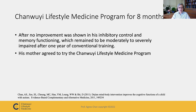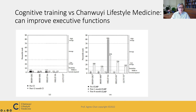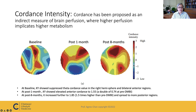After no improvement was seen with conventional training, his mother agreed to try the Chan Wuyi lifestyle medicine program. These graphs show the results of conventional training versus Chan Wuyi lifestyle medicine training. After 12 months of conventional training there was not much improvement in memory, whereas the graphs show improvement after one month and eight months of Chan Wuyi lifestyle medicine — the improvement in memory was much higher than with conventional training. Similarly, for executive function, after one month and eight months of Chan Wuyi lifestyle medicine there was considerable improvement across various measures of executive function ability.